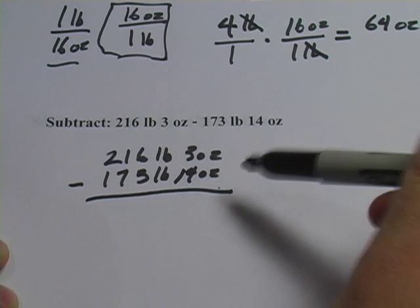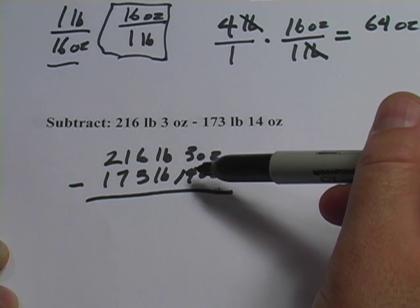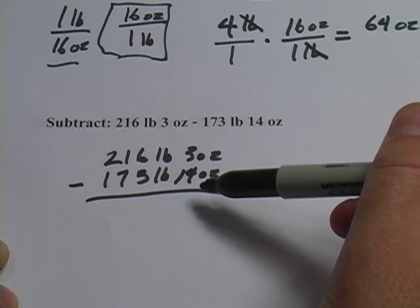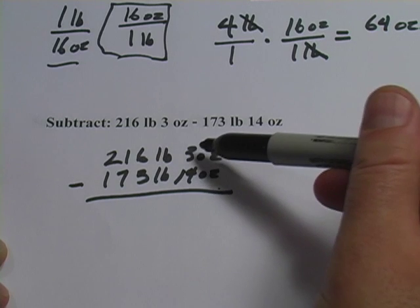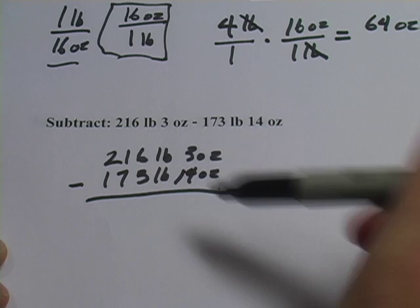Now when I start this, I start here with the ounces and what I notice is I have 3 ounces minus 14 ounces. And just like in regular subtraction, if the number is smaller here, I have to borrow from the next unit over.